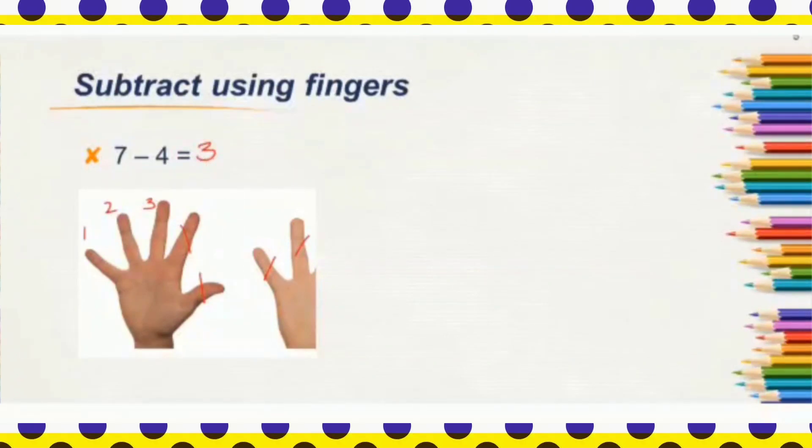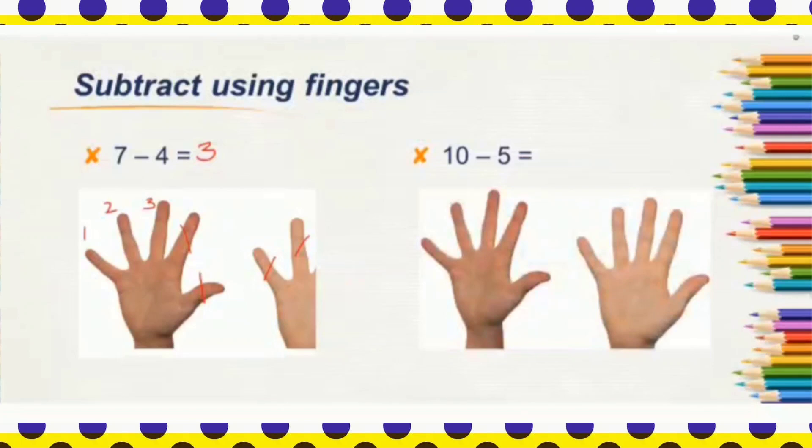Look at another example. Subtract 10 minus 5. Here are 10 fingers. Out of 10 fingers, you will have to take away 5 fingers. 1, 2, 3, 4, 5. So, how many fingers are left? 1, 2, 3, 4, 5 fingers are left. So, 10 minus 5 equals 5.